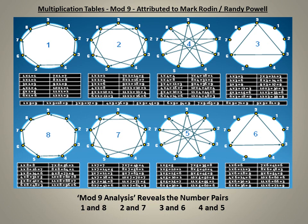The 4 times table goes 4, 8, 12 is 3 mod 9, 16 is 7, 20 is 2, etc. It produces a 9-pointed star, again flowing clockwise. The 3 times table goes 3, 6, 9, 12 is 3, 15 is 6, 18 is 9, and so on, creating the triangle. Again, the flow is clockwise.